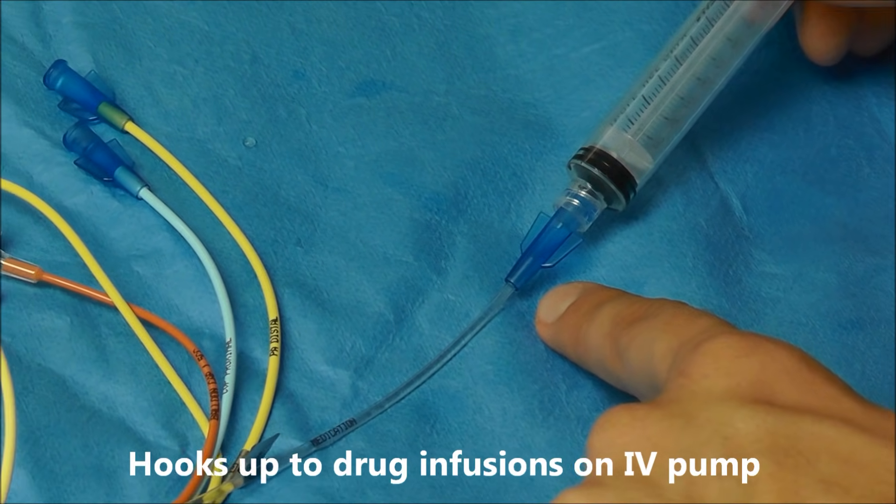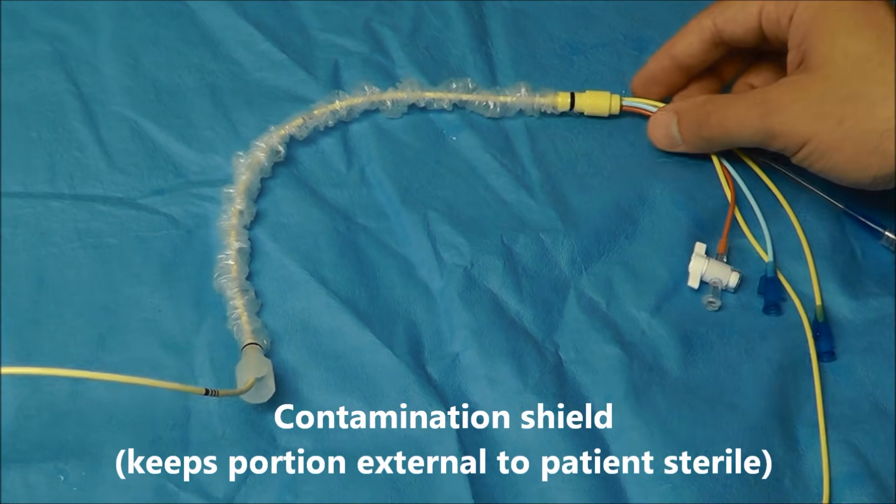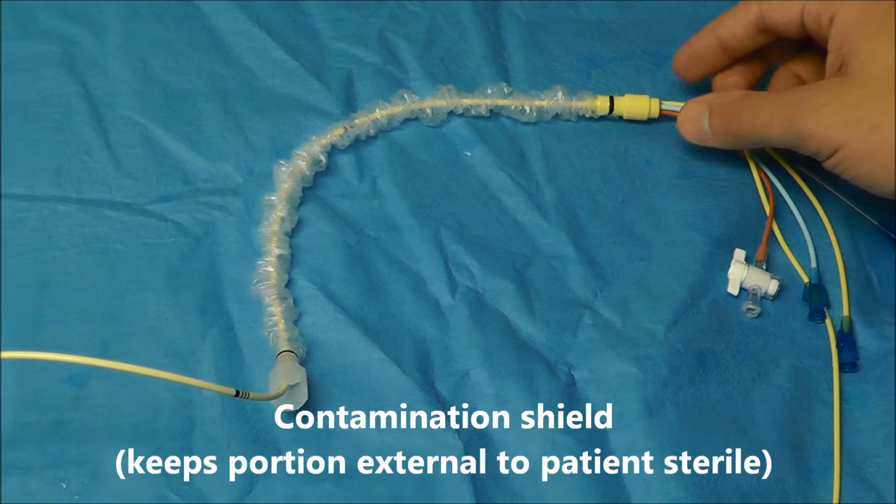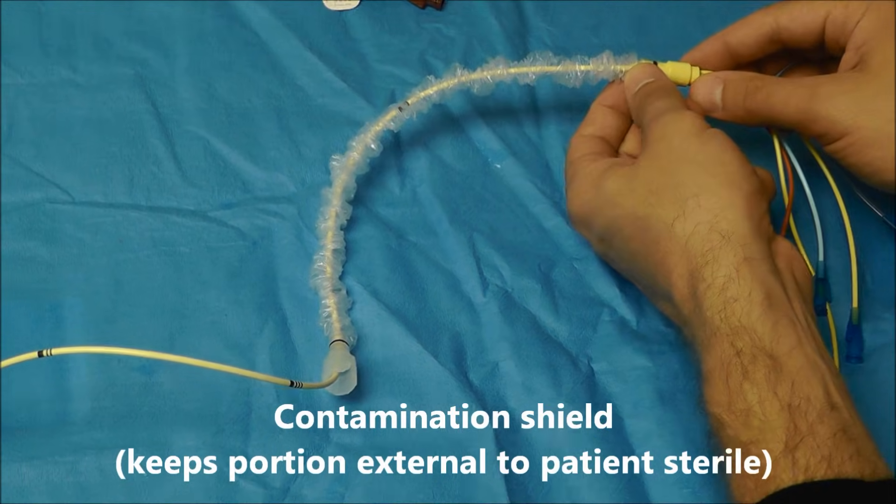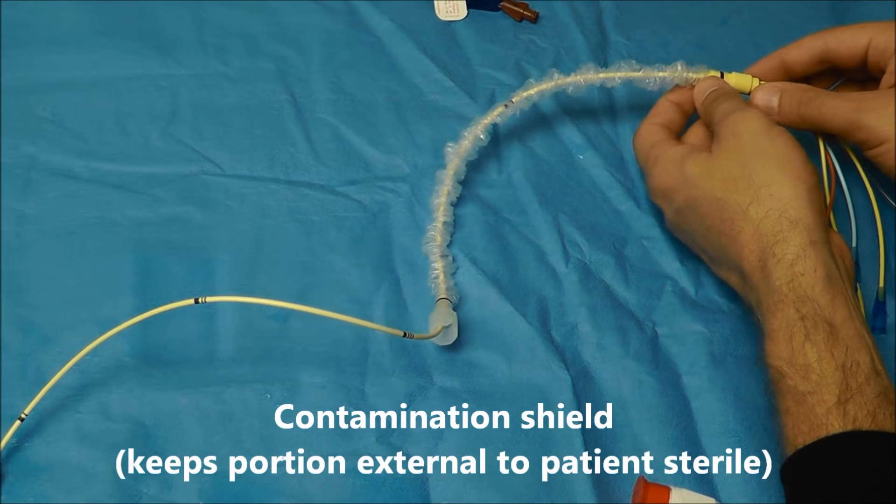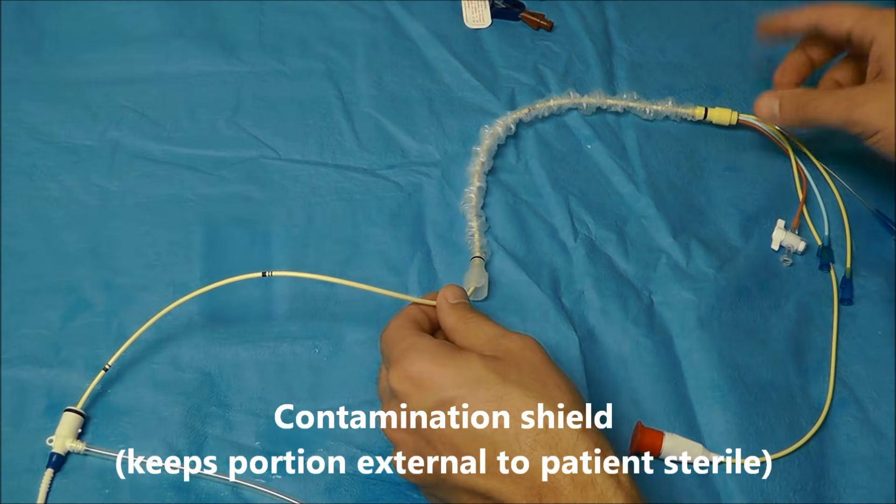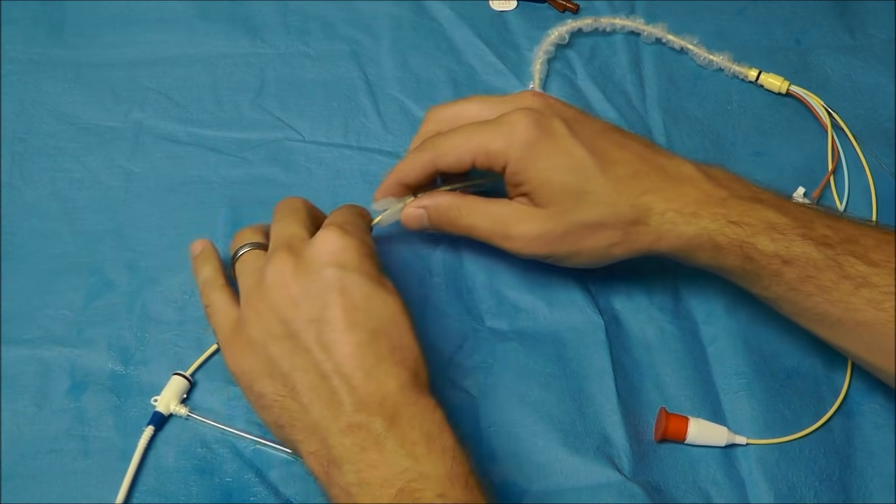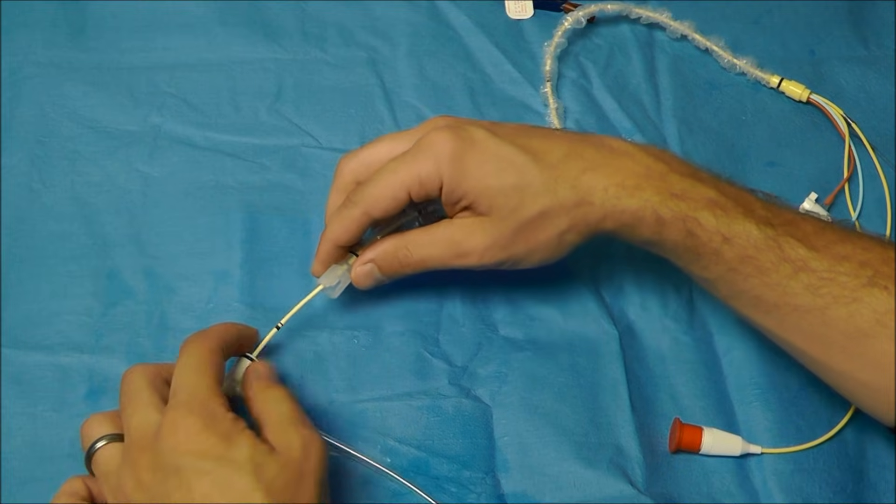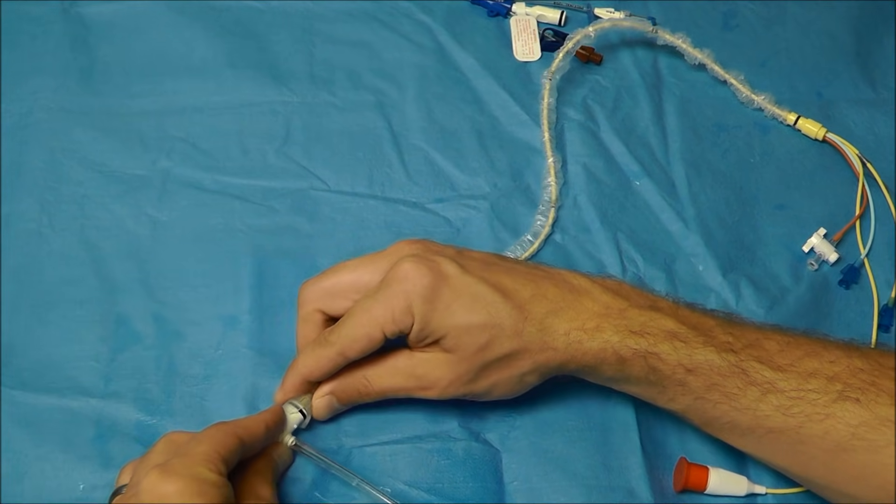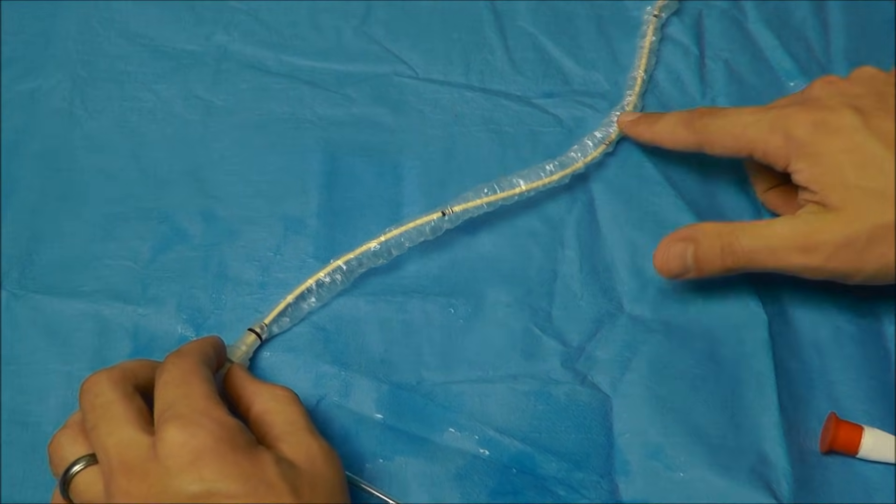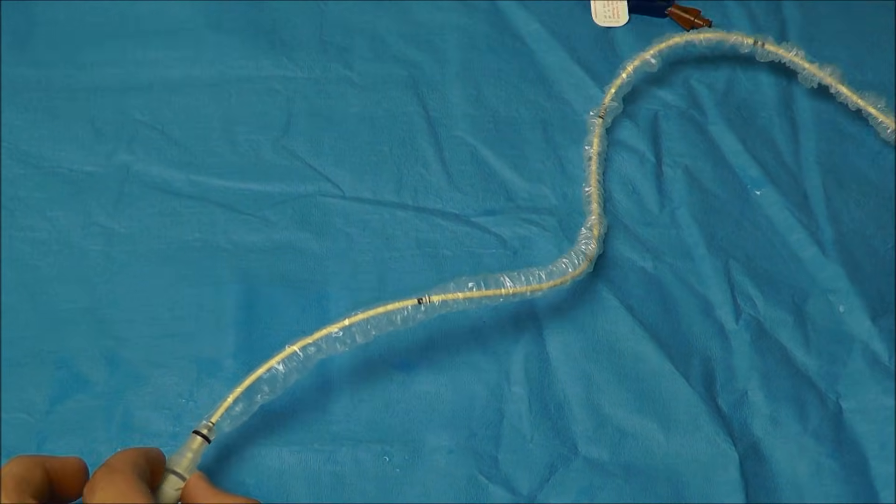The last thing that I want to cover on this pulmonary artery catheter is this sterile contamination shield here. And sometimes it's pre-built onto the Swan, but sometimes you actually have to put it on yourself. But basically once the Swan is in the right place, you bring this contamination shield all the way down to the hub of the cordis and attach. And that allows the portion of the pulmonary artery catheter that is hanging outside of the patient to remain sterile.